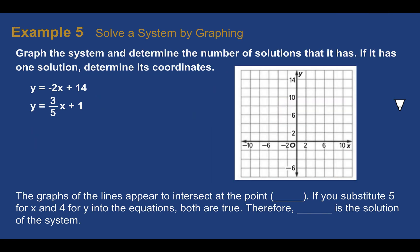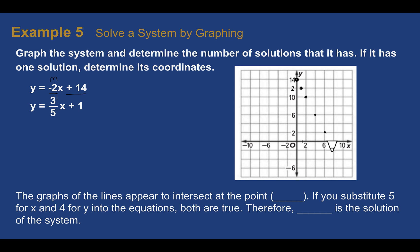Example five: solve a system by graphing. Graph the system and determine the number of solutions it has. If it has one solution, determine its coordinates. We have two lines in slope-intercept form. For y equals negative 2x plus 14: start at the y-intercept of 14, then go down 2 over 1 using the slope. For y equals three-fifths x plus 1: start at 1 and go up 3 over 5. I can see they're going to intersect. Using a straight edge, these two lines appear to intersect at the point 5, 4.